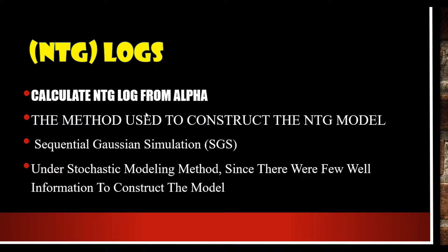To calculate the net-to-gross property, we first need to have the NTG logs. If we are not given the NTG logs, we have to define them ourselves. Most of the time we analyze other logs such as SP or resistivity. Based on our example data, we are going to calculate our NTG based on the alpha log, and the method which will be used is sequential Gaussian simulation.